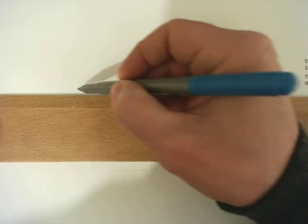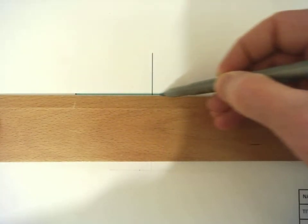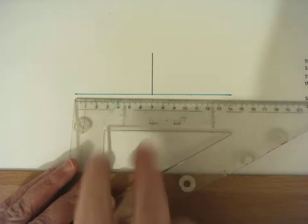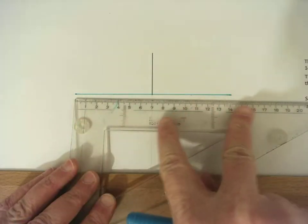The first thing we need to draw is our major axis which is 140mm long, which means you have to measure 70mm and then 70mm again.